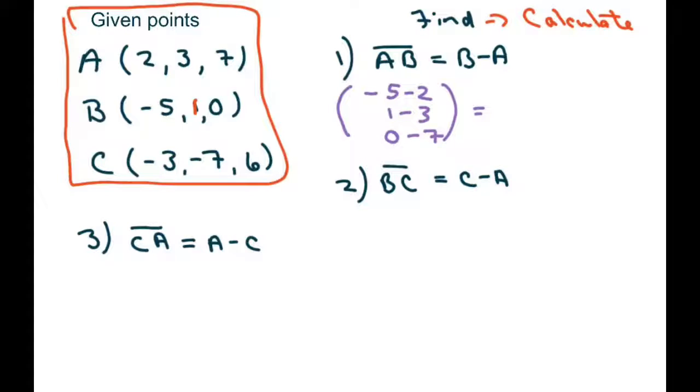And that's going to give you vector negative seven, negative two, and negative seven.